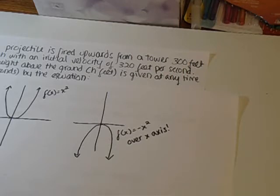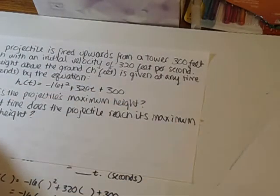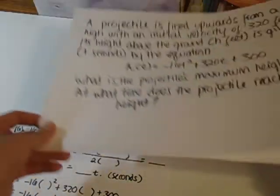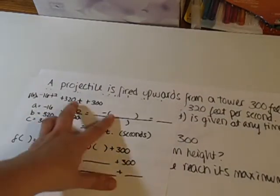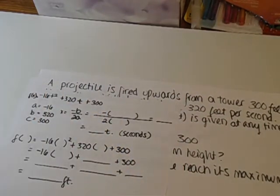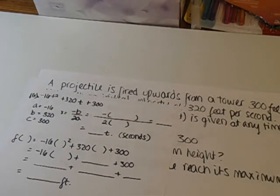To find the maximum value, we need to find its coordinates on that graph based on that function. The equation we use to find the vertex is negative b over 2a. a is negative 16, b is 320, and c is 300.